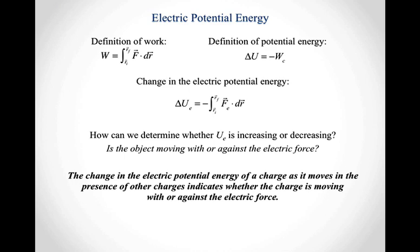The change in the electric potential energy of a charge as it moves in the presence of other charges indicates whether the charge is moving with or against the electric force. If your charge is moving with the electric force, the electric force is doing positive work and the electric potential energy is decreasing. In order for a charge to move against the electric force, some external agent has to move those charges. The electric force tries to move them one way; to move them the other way, some other force must be present. The work done by that external agent is converted into an increase in the electric potential energy.